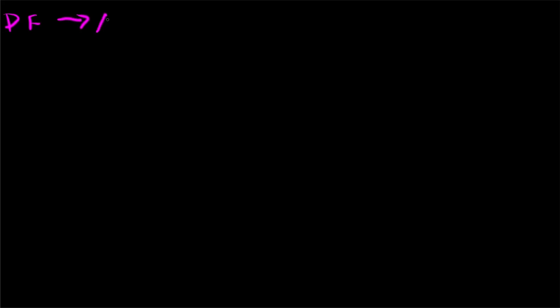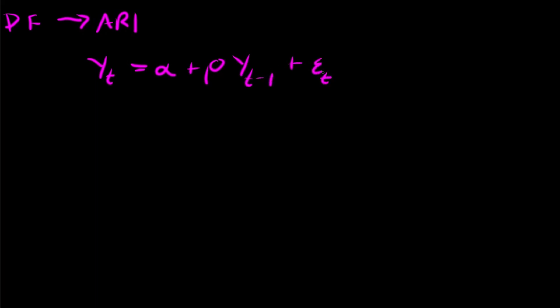The Dickey-Fuller test is just testing for an AR(1) process. So the Dickey-Fuller is going to be testing for the AR(1), and naturally what we would assume is that you have, for example, y(t) = alpha + rho * y(t-1) + epsilon(t). What we're testing for here is that rho is going to be equal to 1, and this is our null hypothesis.